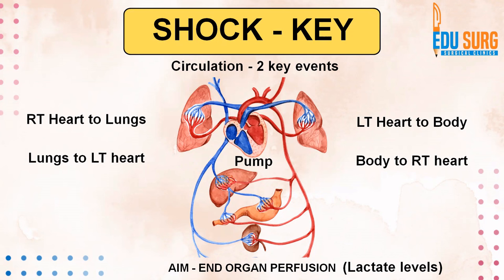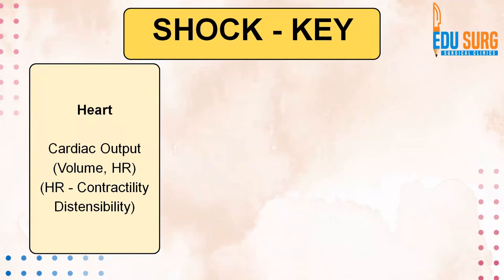If these systems don't work in sync, you can have features of shock — different kinds of shock that we will see in this series. The heart is a pump, and all pumps must produce an output. The heart's output is cardiac output, which is dependent on the rate at which it pumps per minute — the heart rate — and the volume. If the blood volume is less, the pump can't pump enough blood. If there is hypovolemia, cardiac output goes down. Similarly, stroke volume is affected if the heart is weak — even with a good heart rate, the volume pumped out will be less. If there is bleeding or hypovolemia, cardiac output will reduce.